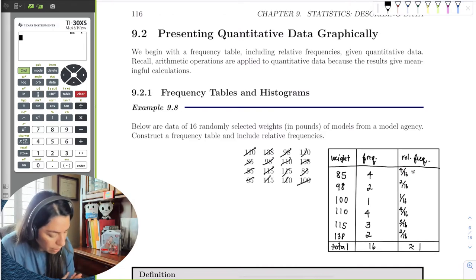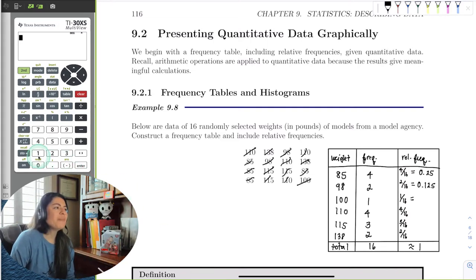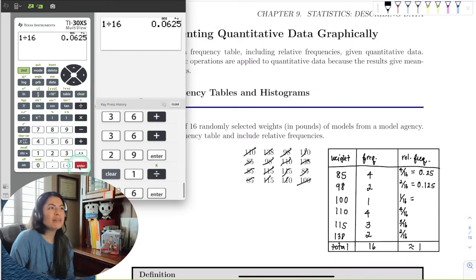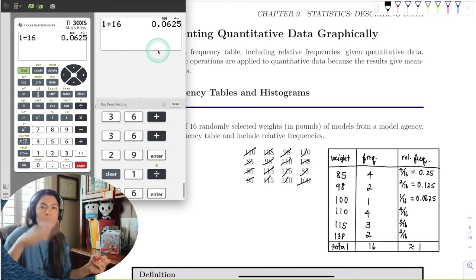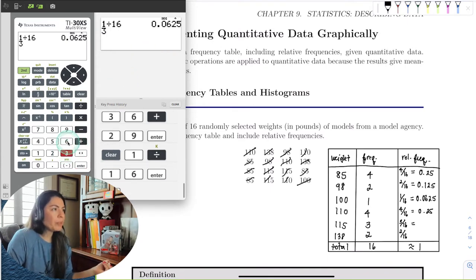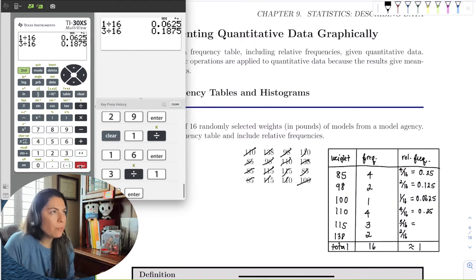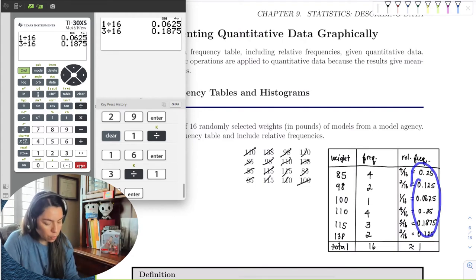4 16ths I can do in my head, but I would put it in the calculator if I needed to. It's a quarter, 0.25. 2 16ths is 1 8th, that's 0.125. 1 16ths, I can't divide that far, so I'm going to put it in the calculator. Just 1 divided by 16 is 0.0625. What's nice is that they are terminating decimals. This is the same as the first row, 0.25. 3 16ths is 0.1875. And 2 16ths is 0.125. If I added these all up, they would be exactly 1.